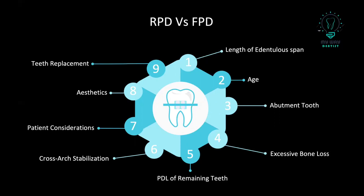The second point is the age of the patient. In young patients, especially those less than 17, they have large pulp chambers and short clinical crowns because some teeth are not fully erupted. These things could cause problems when you do the preparation, so again, RPD is better.